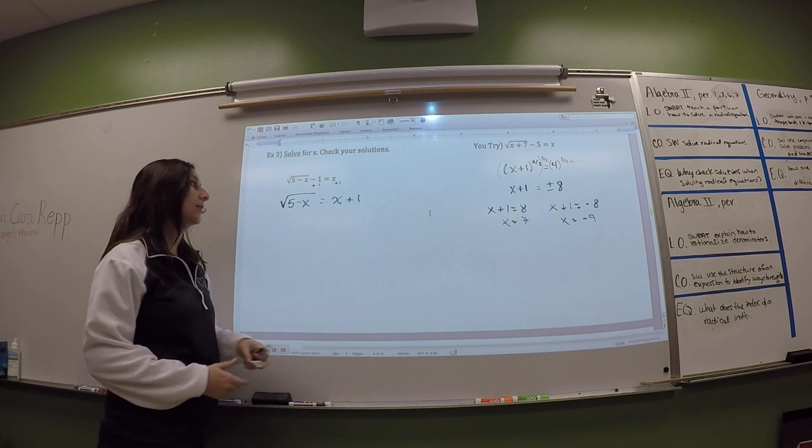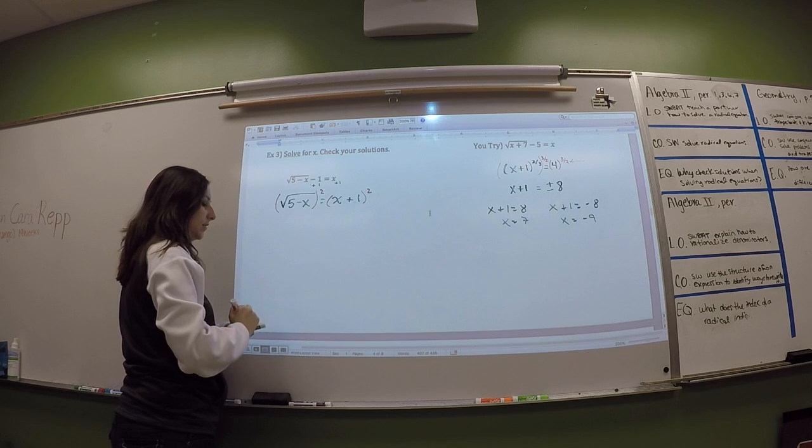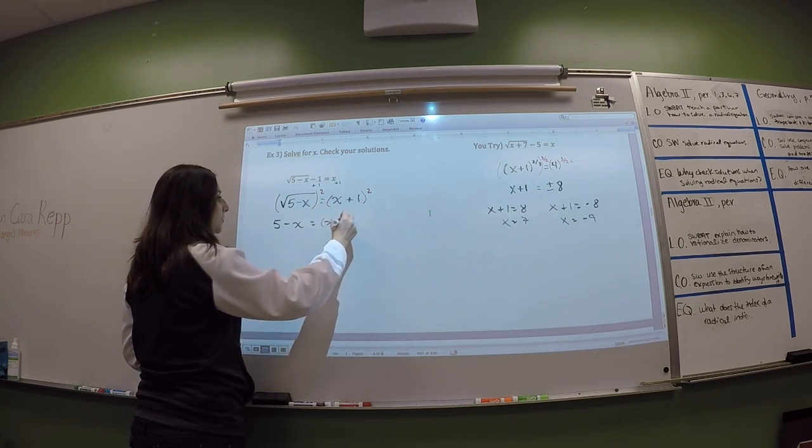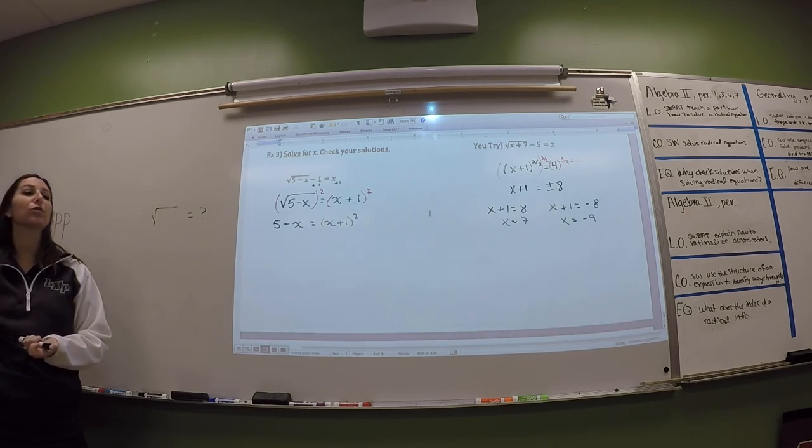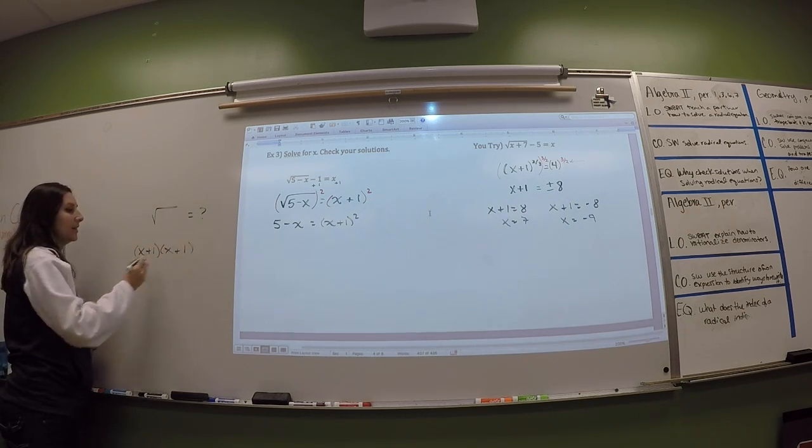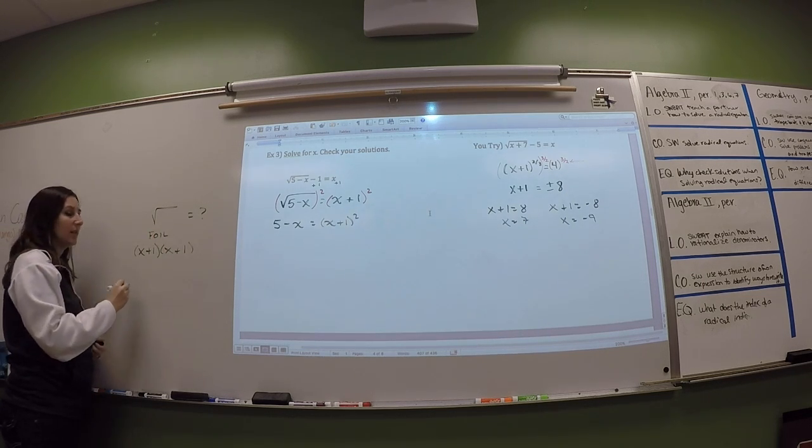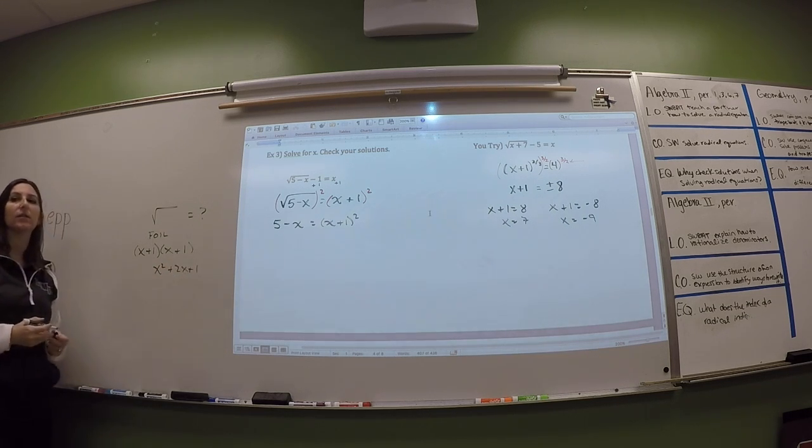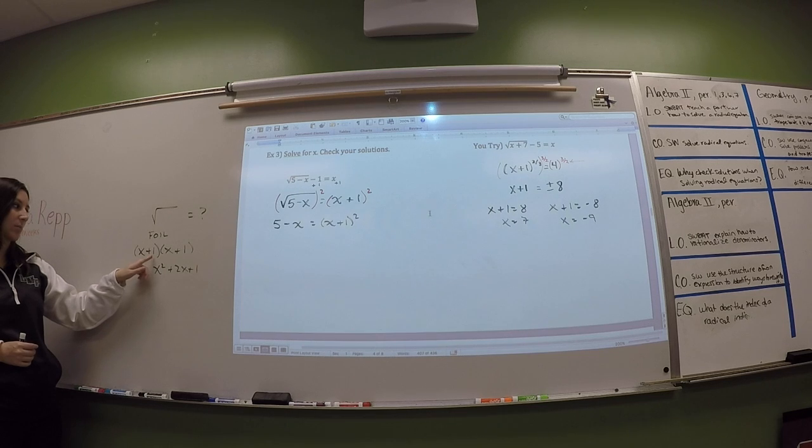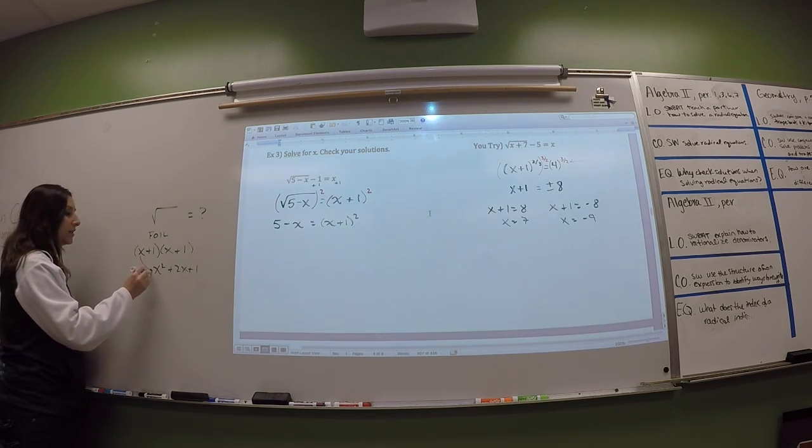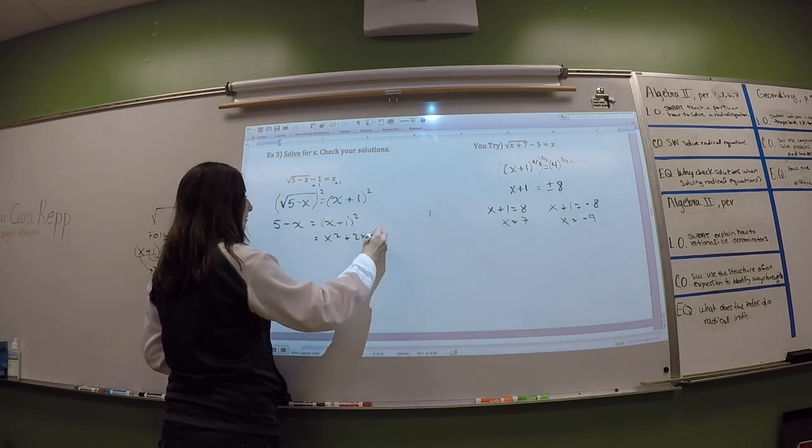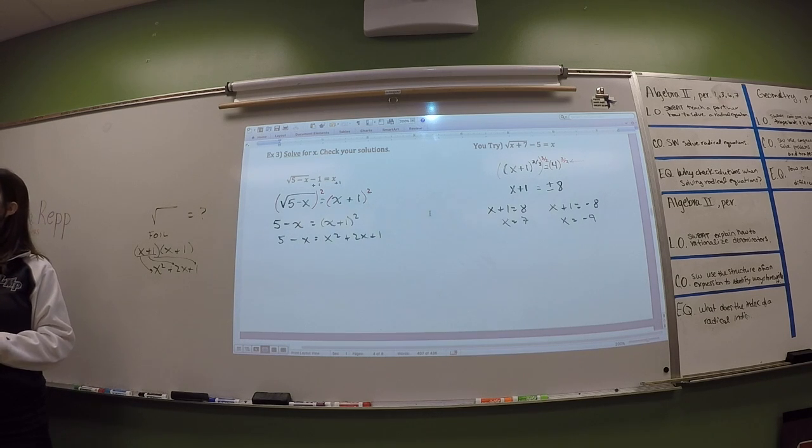Now we can't combine x and 1, so we have to just leave that as the binomial x plus 1. And we're going to square both sides like we did before with square root things. When you square the square root of 5 minus x, you get 5 minus x. When you square x plus 1, you get x plus 1 squared, which is a trinomial if you expand that out. So when you square a binomial, that's like multiplying it by itself, which would involve foiling. And you get x squared plus 2x plus 1. If you want to square a binomial, you square the first term, square the last term, and then you double the two multiplied together. So that's your shortcut. Anyone have questions on that part?